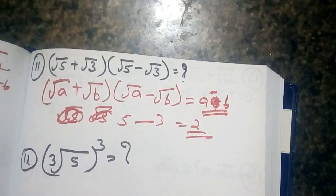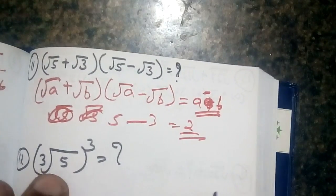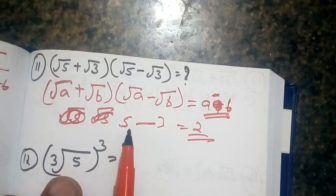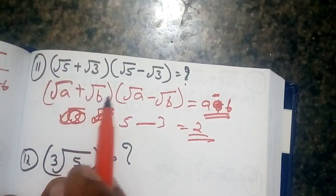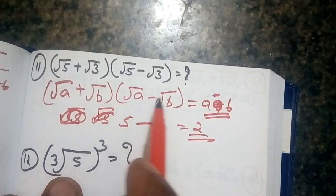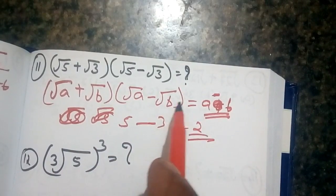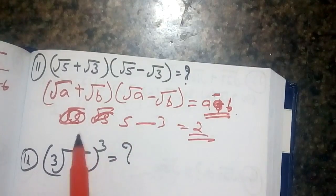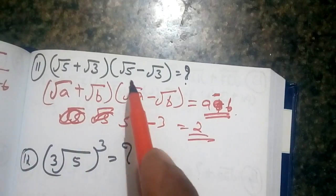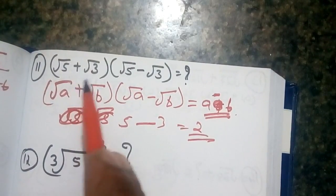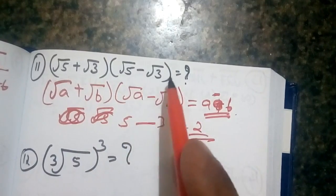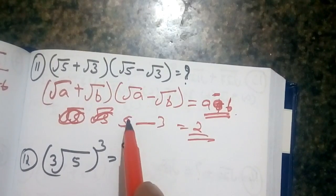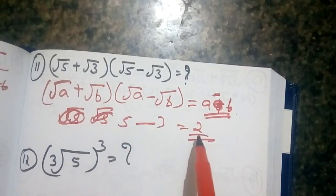So, root a plus root b into root a minus root b means a minus b. That means root 5 plus root 3 into root 5 minus root 3 equals 5 minus 3, which means 2.